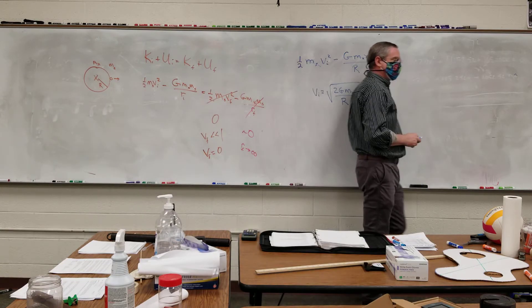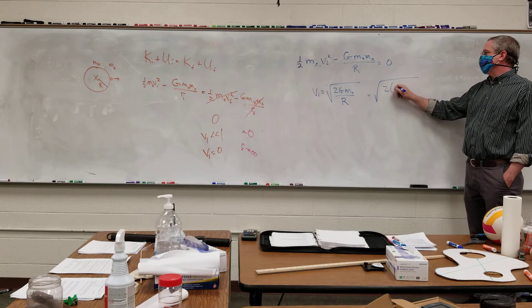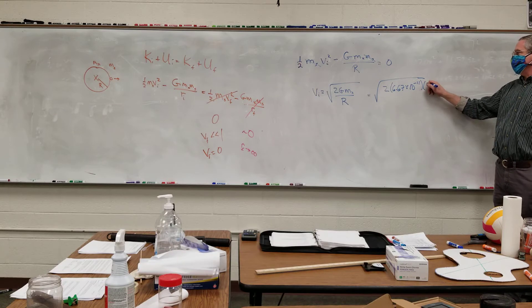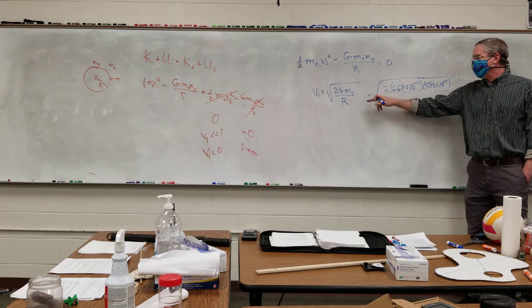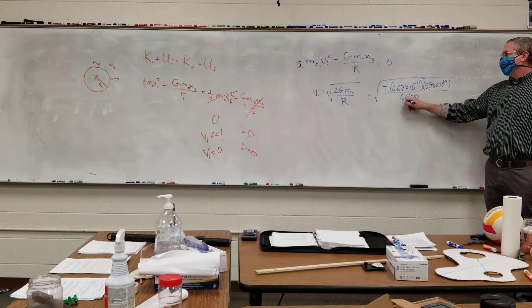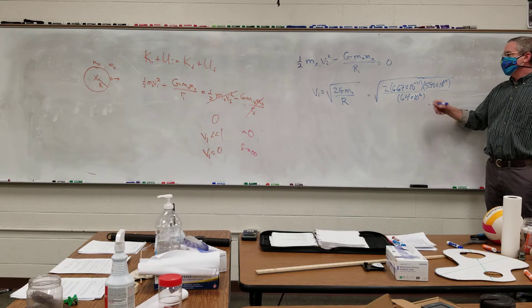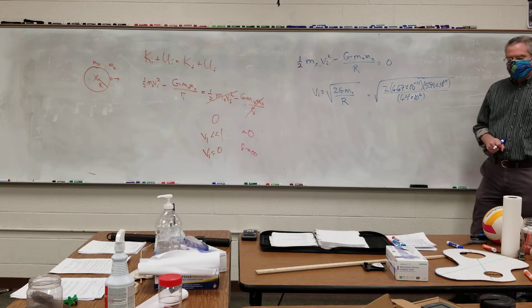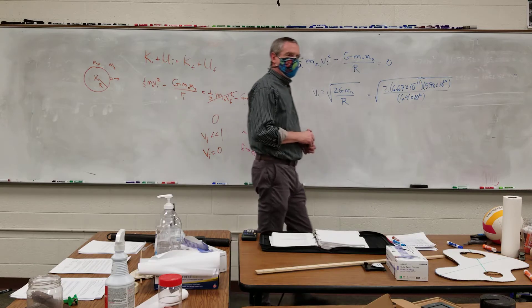If we plug in, let's assume we're dealing with Earth. This becomes the square root of two times the 6.67 times 10 to the negative 11th. That's big G mass of the Earth 5.98 times 10 to the 24th, divided by the radius of the Earth, which is about 6.4 times 10 to the 6th meters. Yeah, this is about 6,400 kilometers. And if you crank that into the calculator, what do you get?